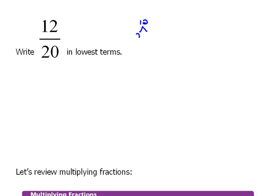12 would be 2 times 6. 2 is prime. 6 would be 2 times 3, and now both of those are prime. So for our numerator, it would be 2 times 2 times 3. That's just another way of writing 12.